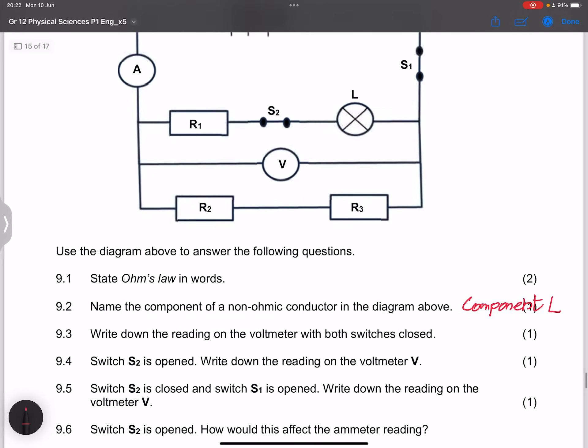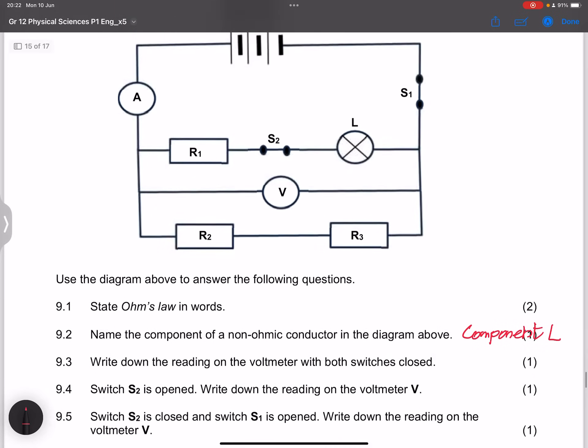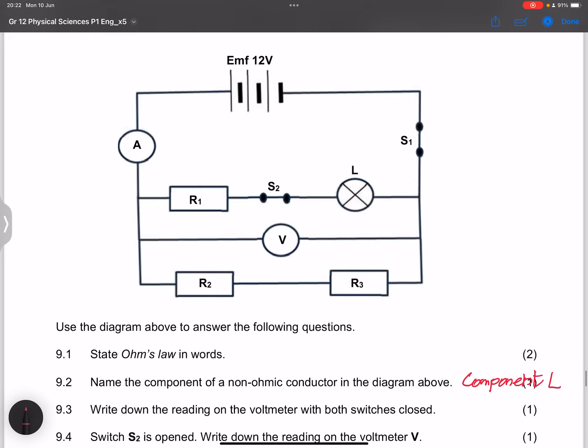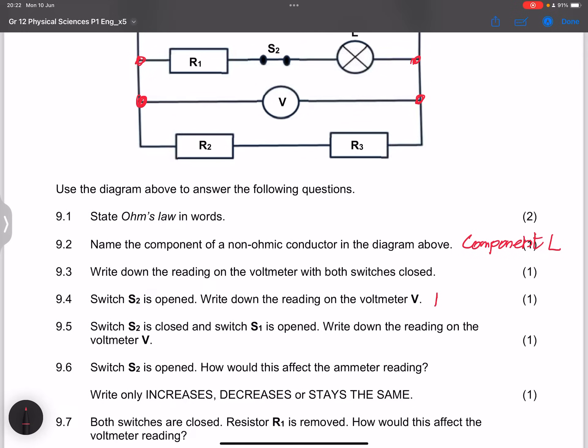Now they say write down the reading on the voltmeter with both switches closed. If we note there, the voltmeter would actually be reading the parallel voltage, which means it's the same as the EMF. So here our voltmeter would have a reading of 12 volts.